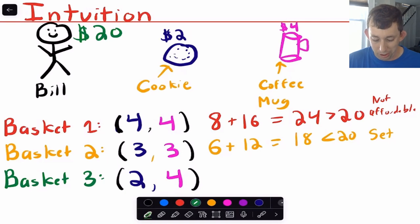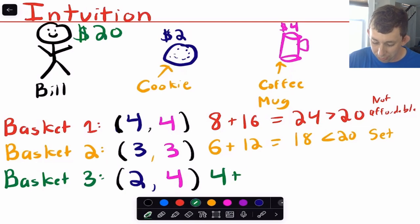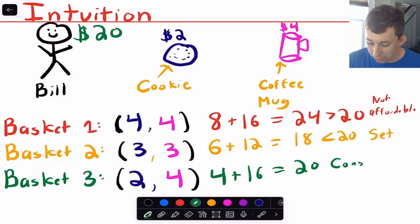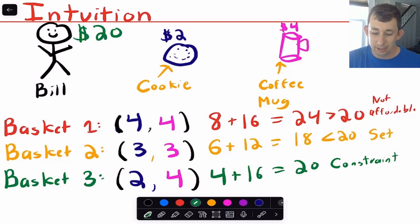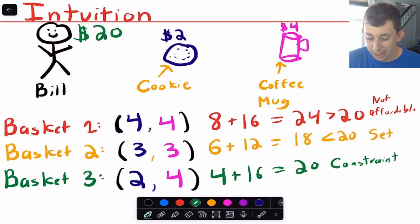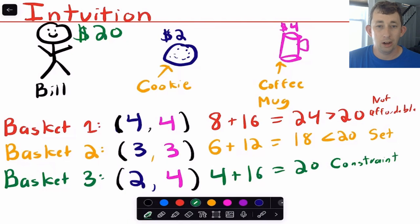Basket three has two cookies and four coffee mugs. Two cookies at $2 a cookie is $4, and four mugs at $4 each is $16 — exactly equal to $20. So we say that basket three is on Bill's budget constraint because it is affordable but just barely affordable. The budget constraint is just barely affordable, while the budget set means you don't have to spend all your money to afford that bundle.